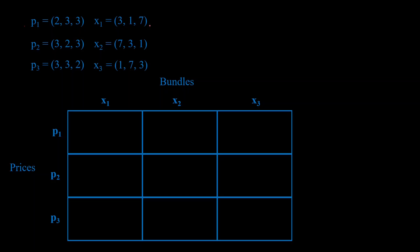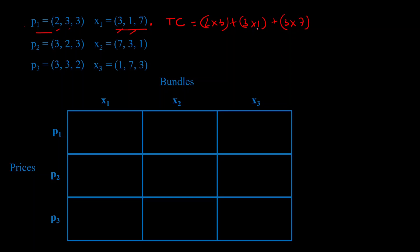Now we want to know how much it costs to buy a bundle at a particular price. You can calculate that using something of a dot product — all you have to do is multiply the price on each component with the corresponding quantity in the bundle. So the total cost for bundle X1 at price P1 will be 2×3 + 3×1 + 3×7, which gives 6 + 9 + 21 = 30.